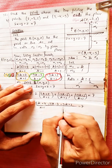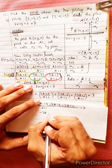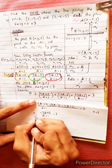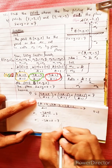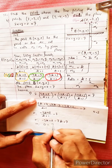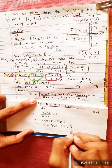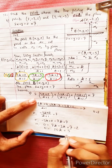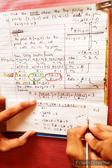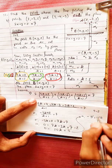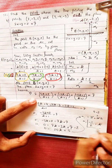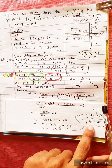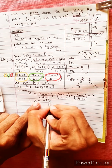Simplifying: minus 3k plus 2 equals 7k plus 7. So 0 equals 10k plus 5, which gives minus 5 equals 10k, therefore k equals minus 1 by 2.